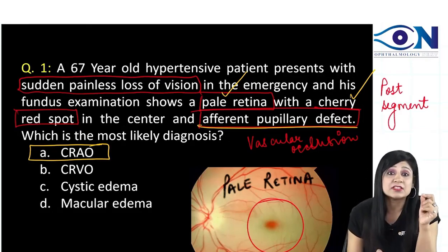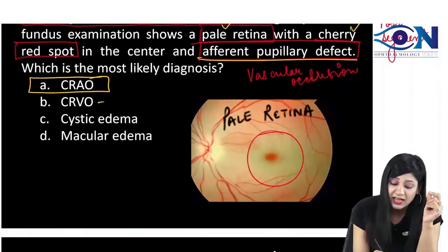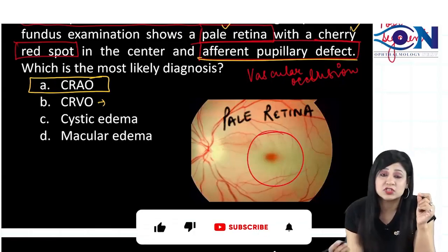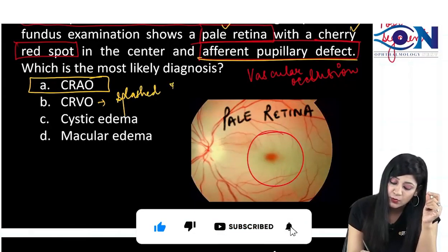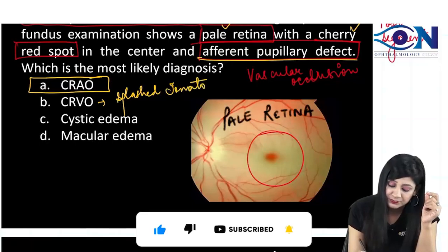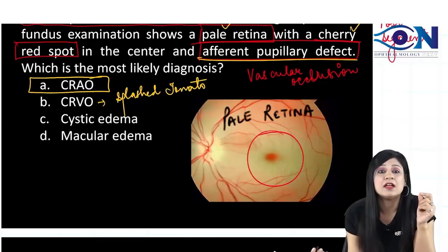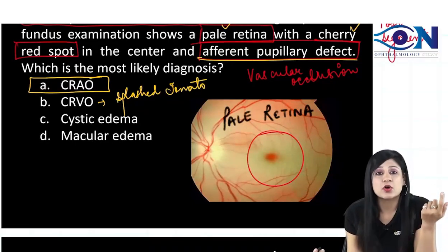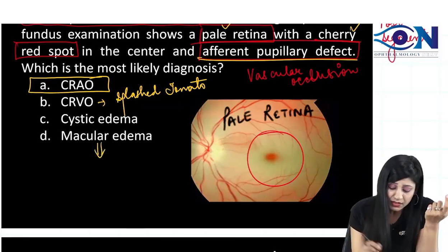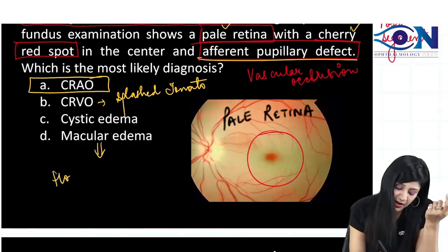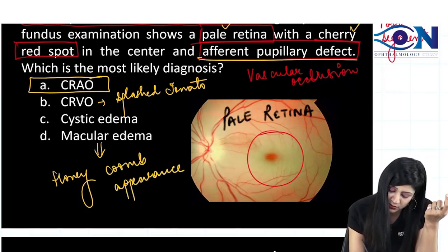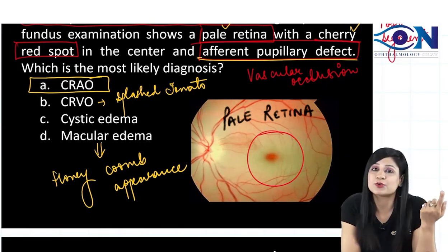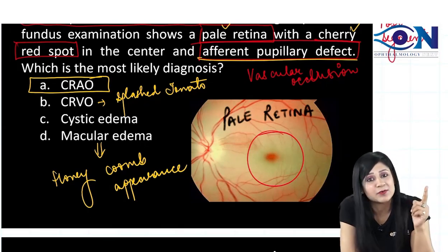By the exclusion criteria: CRVO is not going to give you a cherry red spot — it gives you the splashed tomato appearance. Cystoid macular edema gives you a honeycomb appearance on the fundus. So neither of these is the answer. You can be sure that the answer is CRAO.